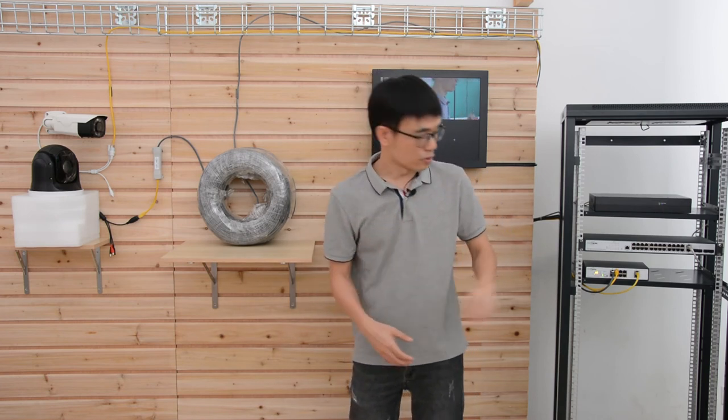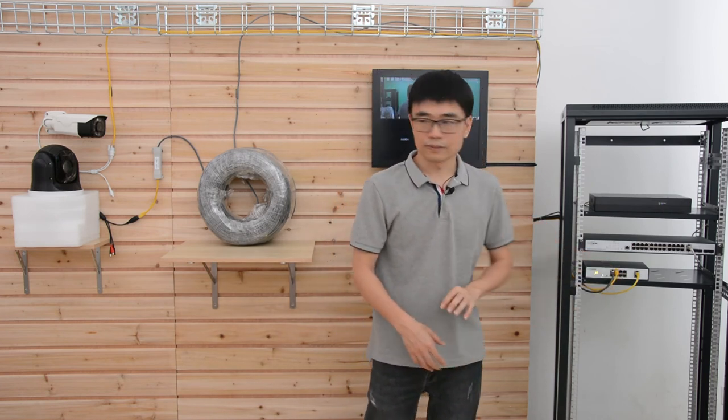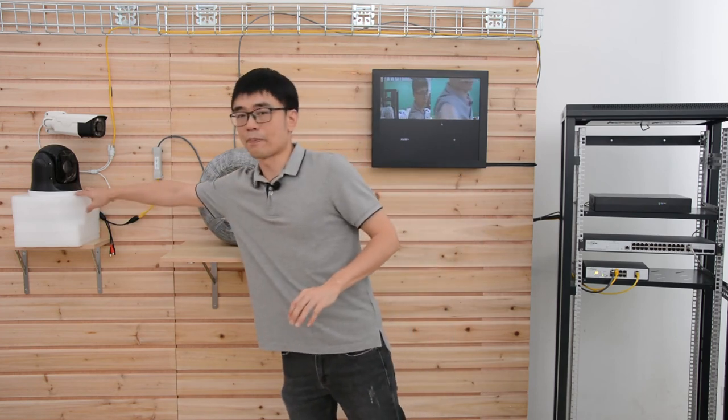This long range PoE switch uses all four twist pairs to send the power. In PoE or PoE plus, only half of the twist pairs send the power. So even for 1000 feet, we still can power this infrared pan-tilt-zoom camera. It still has enough power.